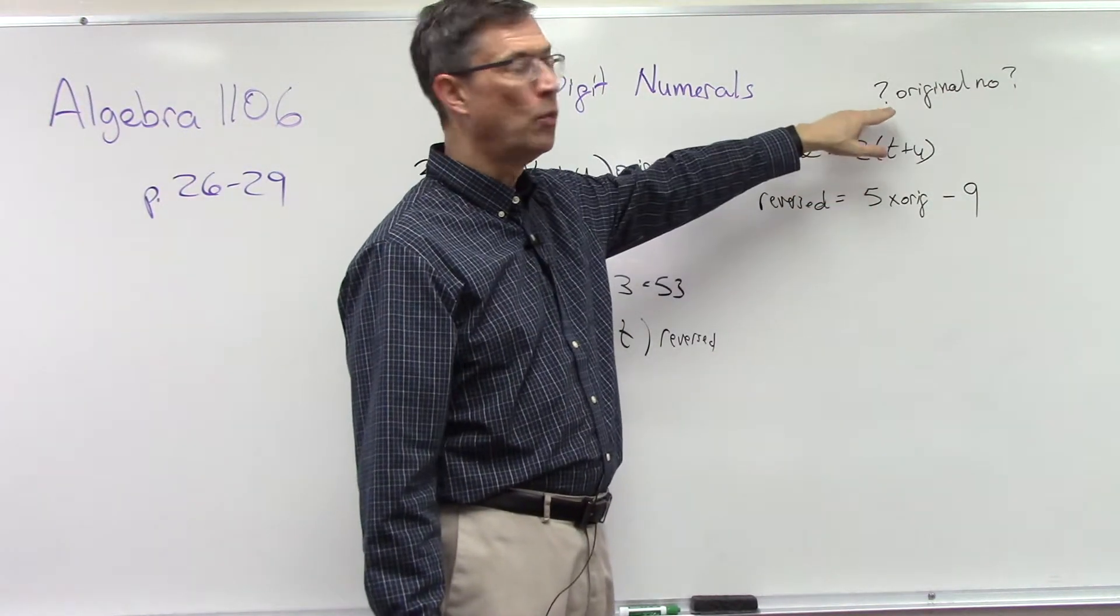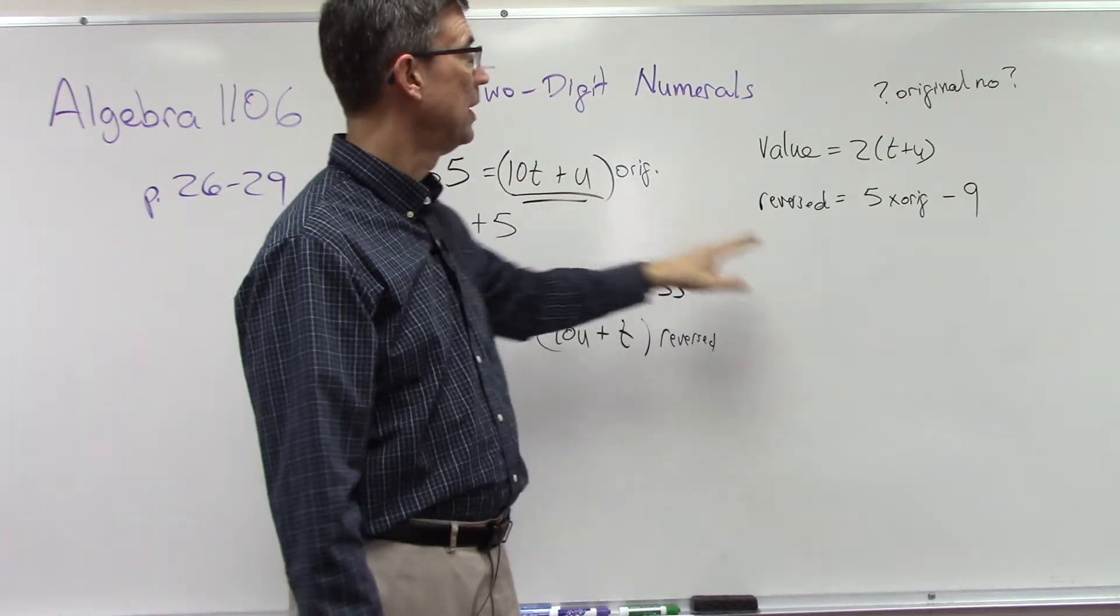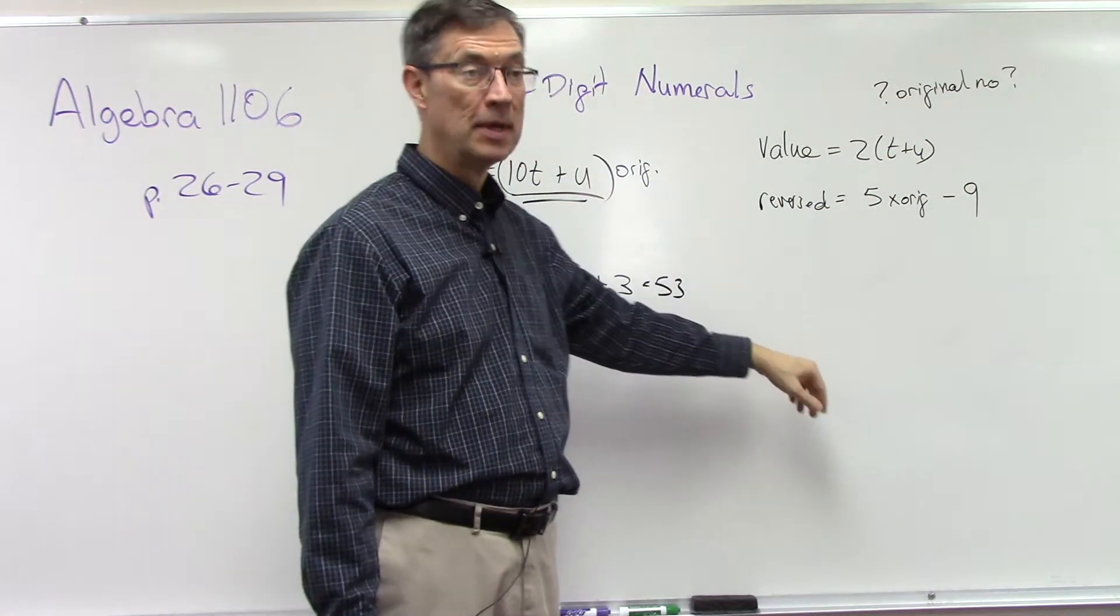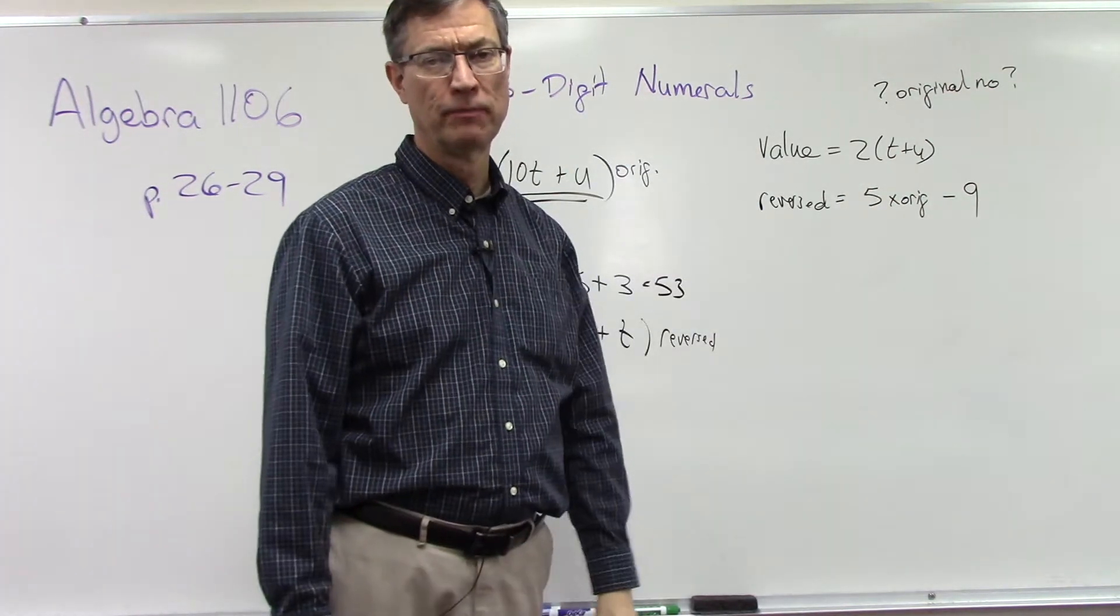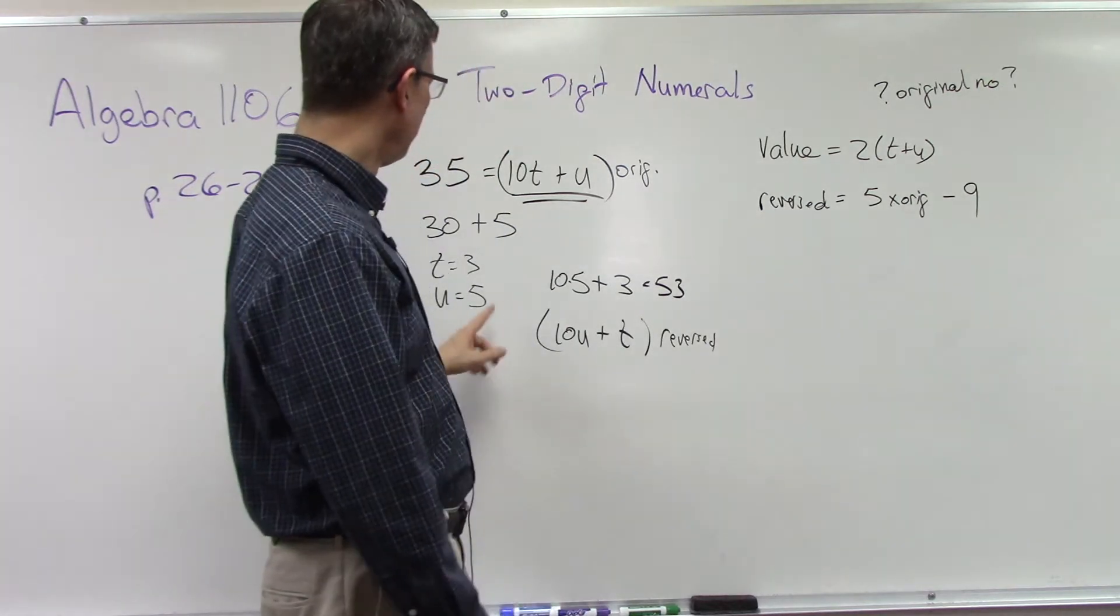It says, what was the original number? So you're going to take 10 times the answer you get for t, plus the units digit, and that will give you the original number. Okay, a lot of steps involved, but this is kind of the key to understand.